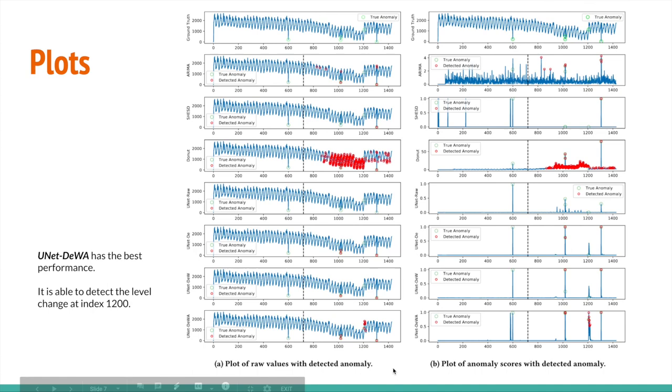To further understand the detection performance, we demonstrate the plot of the raw values with detected anomaly for each method, as well as the plot of anomaly scores. As we can see, U-net with decomposition, weight adjustment, and augmentation achieves the best performance. Thank you.